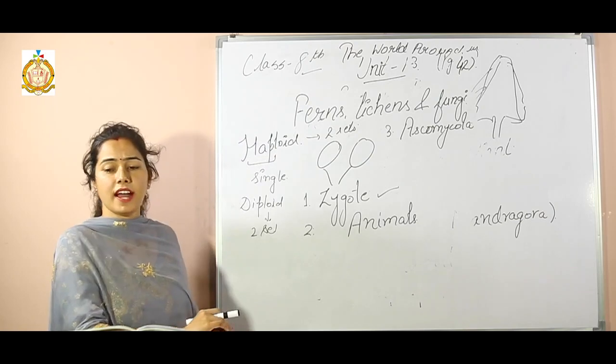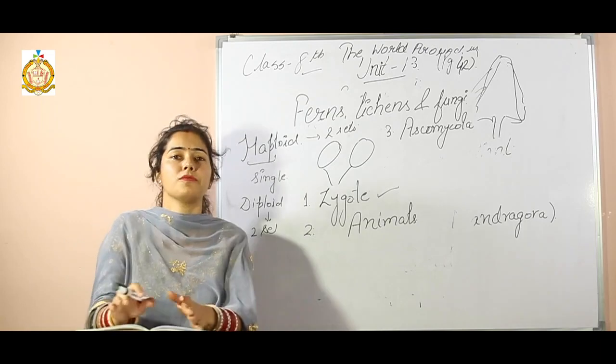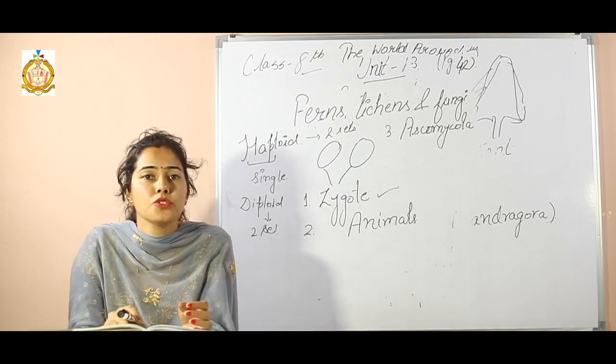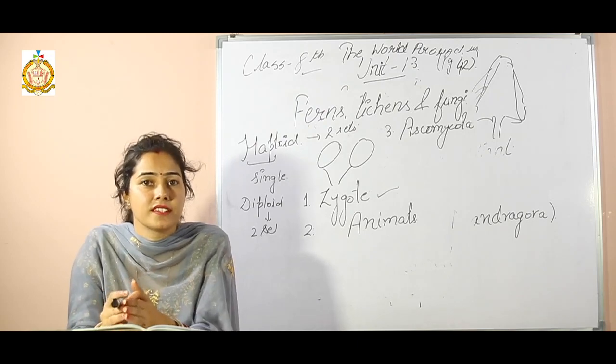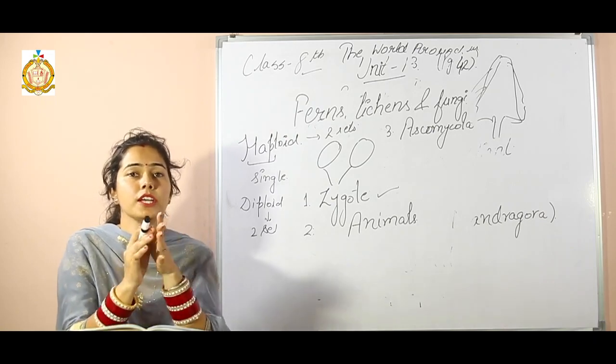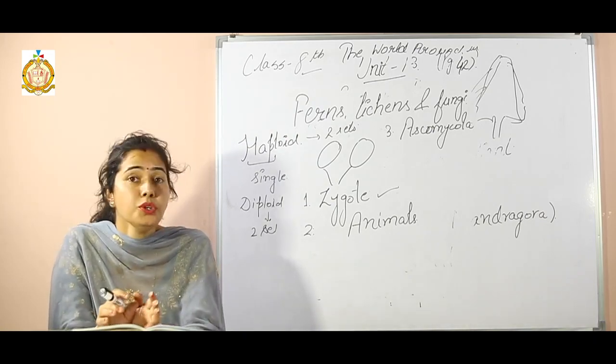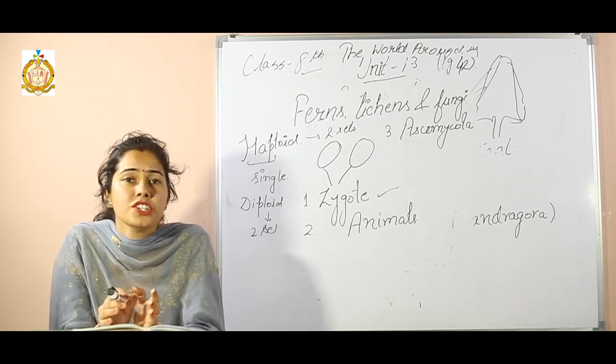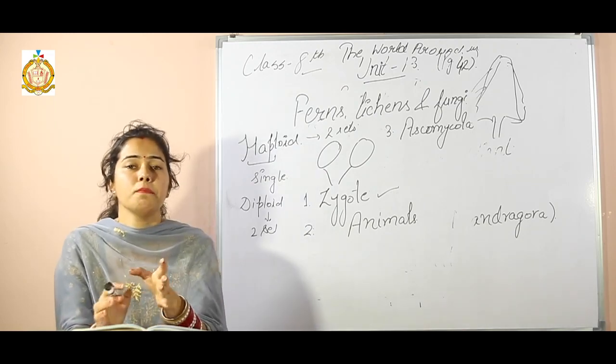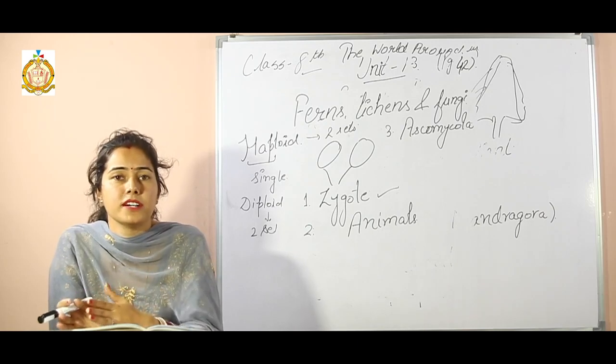Now the next one is page number 43, unique birds. First of all, what are birds? Birds are organisms where most birds have feathers and can fly. The chapter is about unique birds. Unique means they have some special character. Here different pictures are given and some descriptions of the birds. We will discuss them one by one.